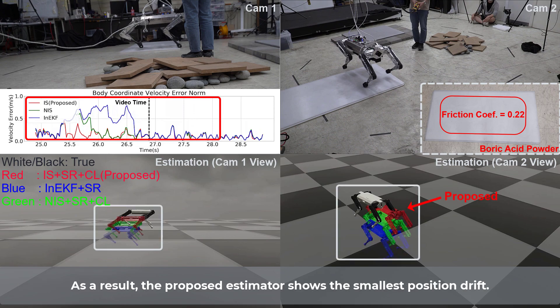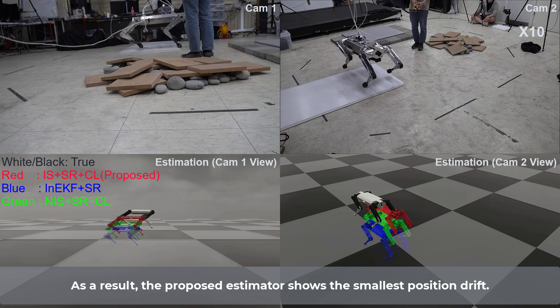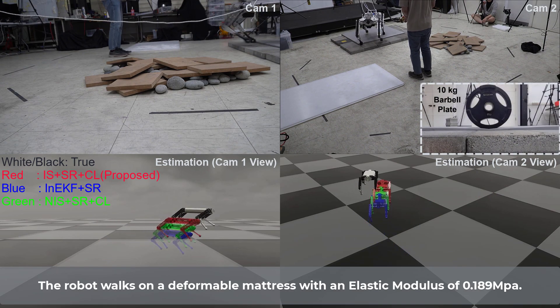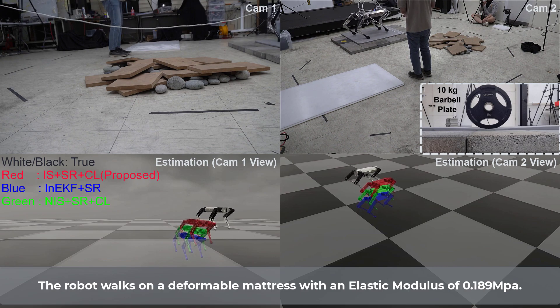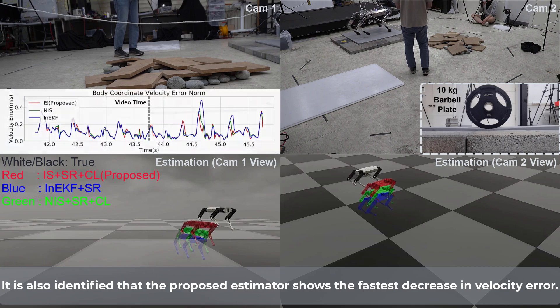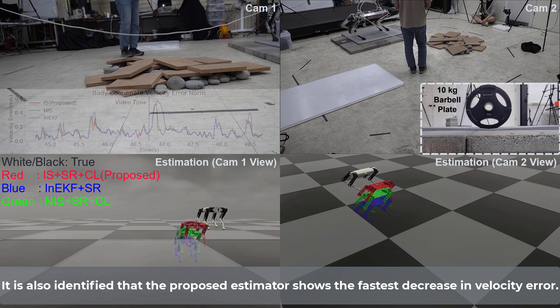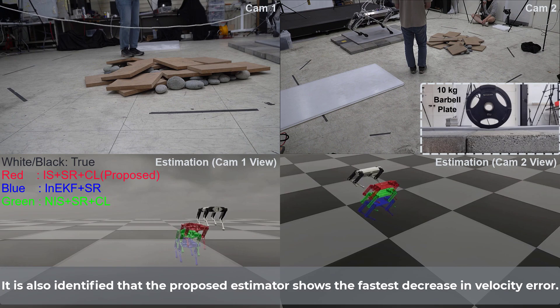As a result, the proposed estimator shows the smallest position drift. The robot walks on a deformable mattress with an elastic modulus of 0.189 MPa. It is also identified that the proposed estimator shows the fastest decrease in velocity error.